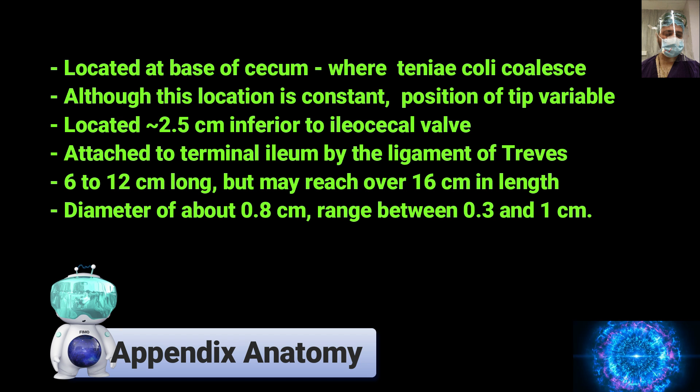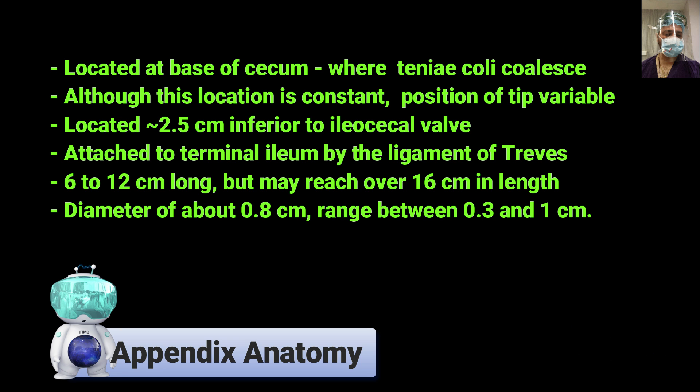Briefly, regarding anatomy: the appendix is located at the base of the caecum where all three taeniae coli converge — this is a constant position. However, the position of the tip of the appendix is variable. The base of the appendix is located approximately 2.5 centimetres inferior to the ileocaecal valve and is attached to the terminal ileum by a fold — the ligament of Treves. The usual length of the appendix is 6 to 12 centimetres, but it can reach up to 16 centimetres.